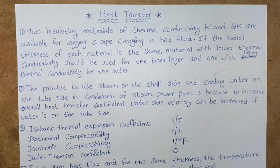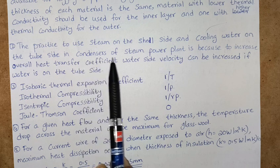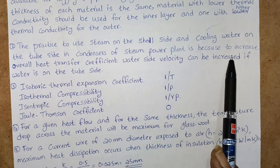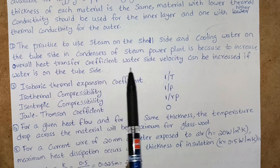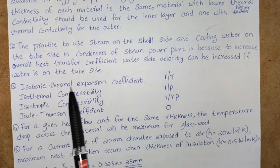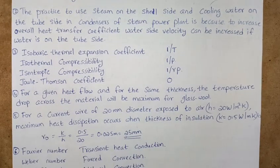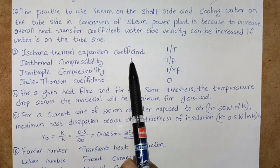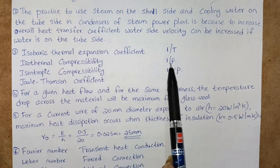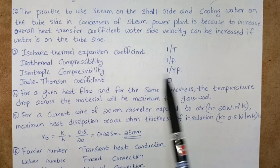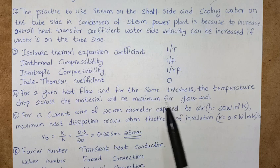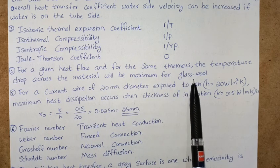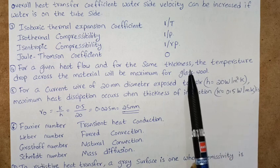Now we'll move to the next one. The practice to use steam on the shell side and cooling water on the tube side in condensers of steam power plant is because to increase overall heat transfer coefficient, water side velocity can be increased if water is on the tube side. Next: isobaric thermal expansion coefficient is 1/T, isothermal compressibility is 1/p, isentropic compressibility is 1/(gamma*p), and Joule-Thompson coefficient is zero. For a given heat flow and for the same thickness, the temperature drop across the material will be maximum for glass wool.